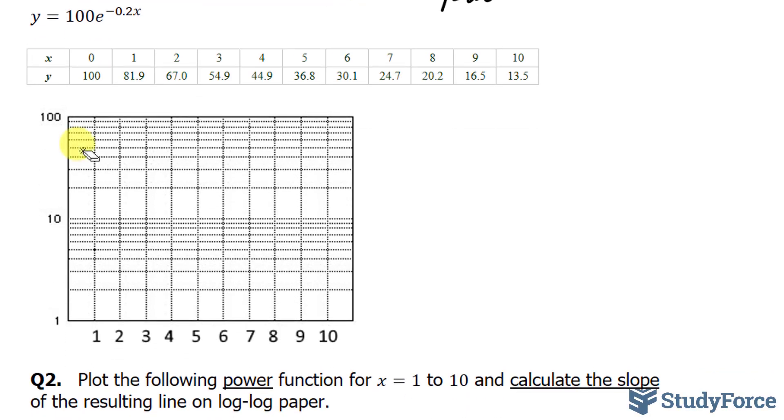The first point that we'll plot is 0 and 100. The next point is 1 and 81.9. So just to be aware of what's happening here, this is 10, this is 20, this is 30, 40, 50, 60, 70, 80, and this is 90. So 1 and 81.9 will be between 80 and 90, so that should be approximately here.